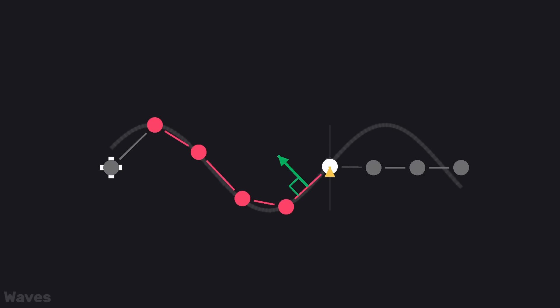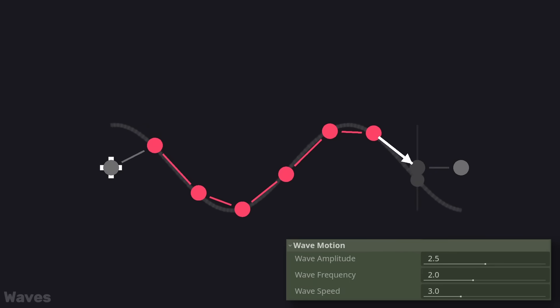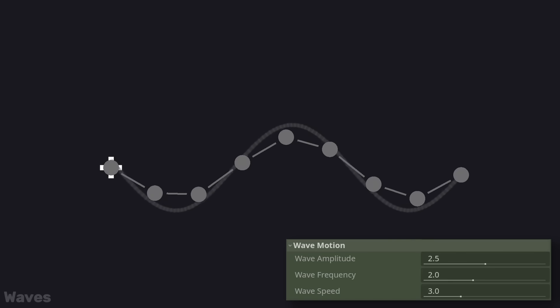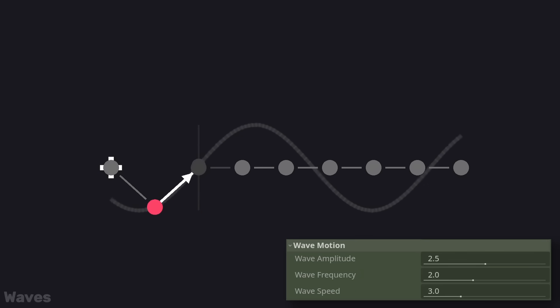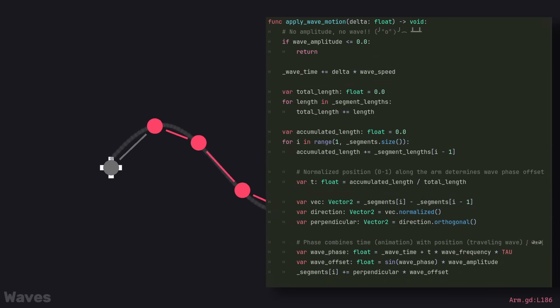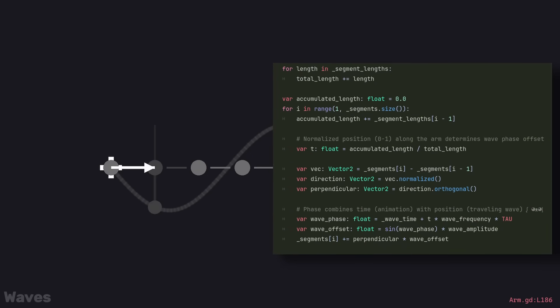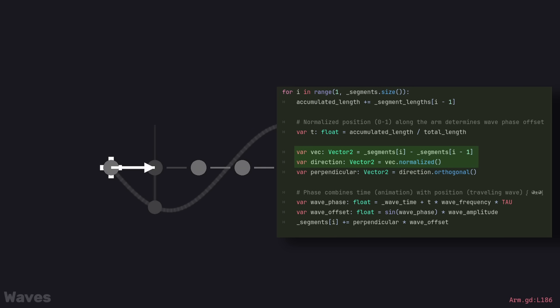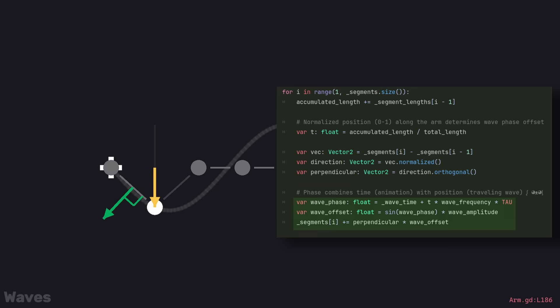Our sine wave is made out of three main components: amplitude, or the height of the wave; frequency, how many waves; and finally, speed. For each segment, we get the direction along the arm as before, calculate the perpendicular vector, and then move the joint by calculating the offset between it and the sine wave. Each segment gets a normalized position from 0 to 1 — base being 0, middle segments in between, and the tip 1.